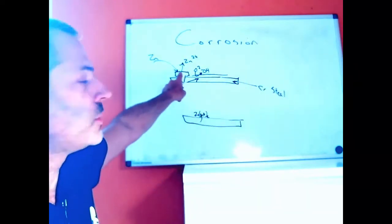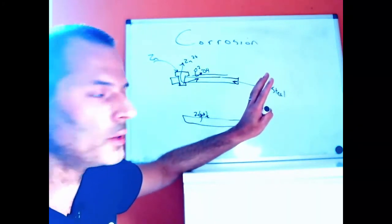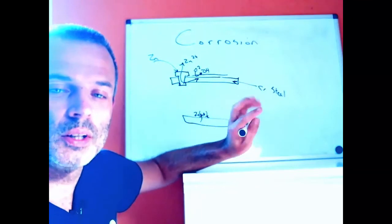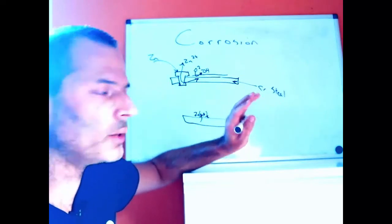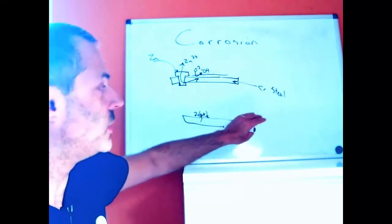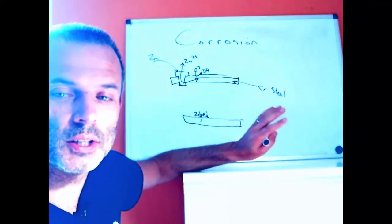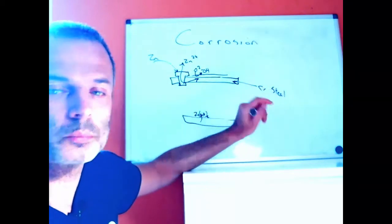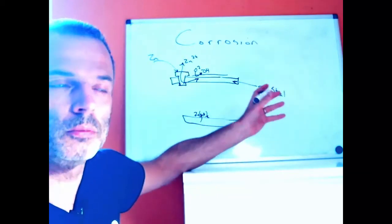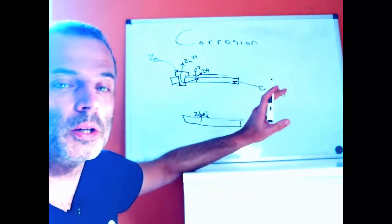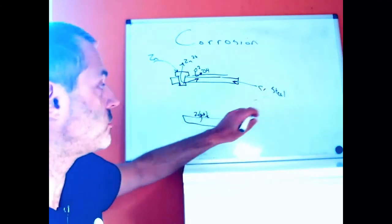From our Pourbaix diagrams: zinc is unstable in acidic conditions and can dissolve straight into Zn²⁺. In neutral to basic conditions zinc is quite stable — it forms an oxide layer that is kinetically stable because the oxide layer gets in the way. If we leave a piece of zinc in the environment it dissolves at a rate measured in micrometers per year, so a millimeter of zinc will take a really long time to go away.